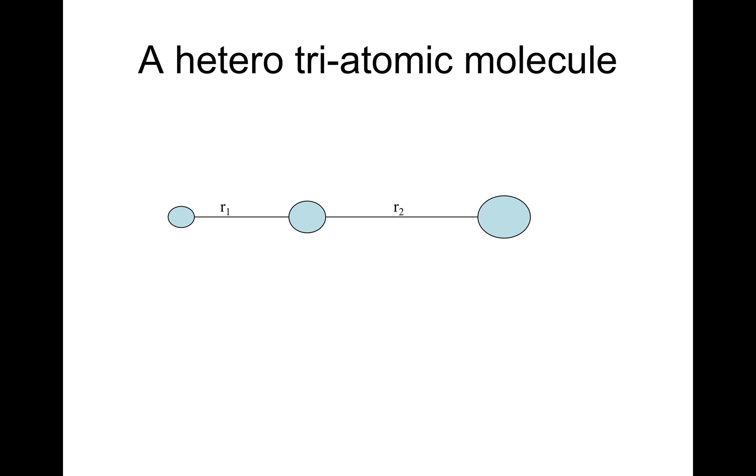A heterotriatomic molecule is considered now. For a molecule with three different atoms, like we have here, we will have R1 and R2, which will be different.